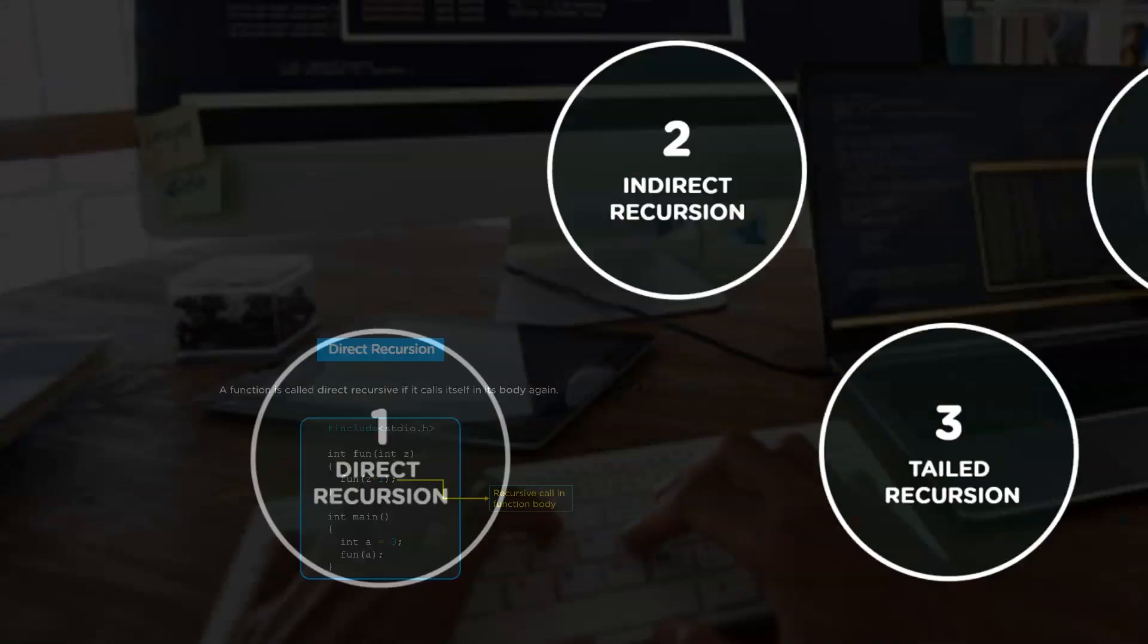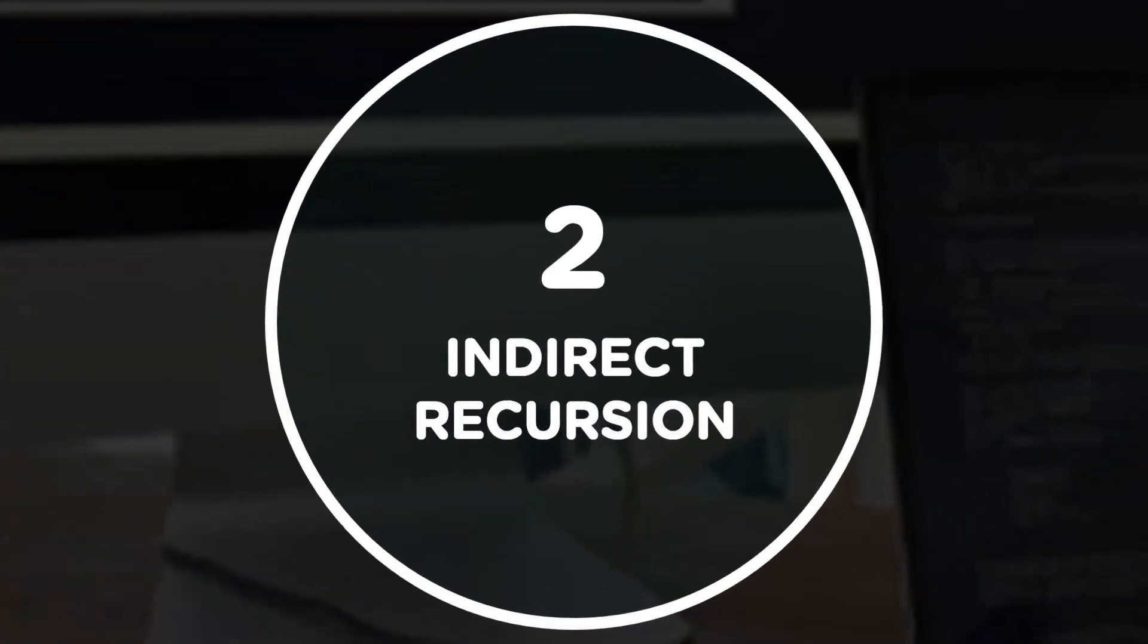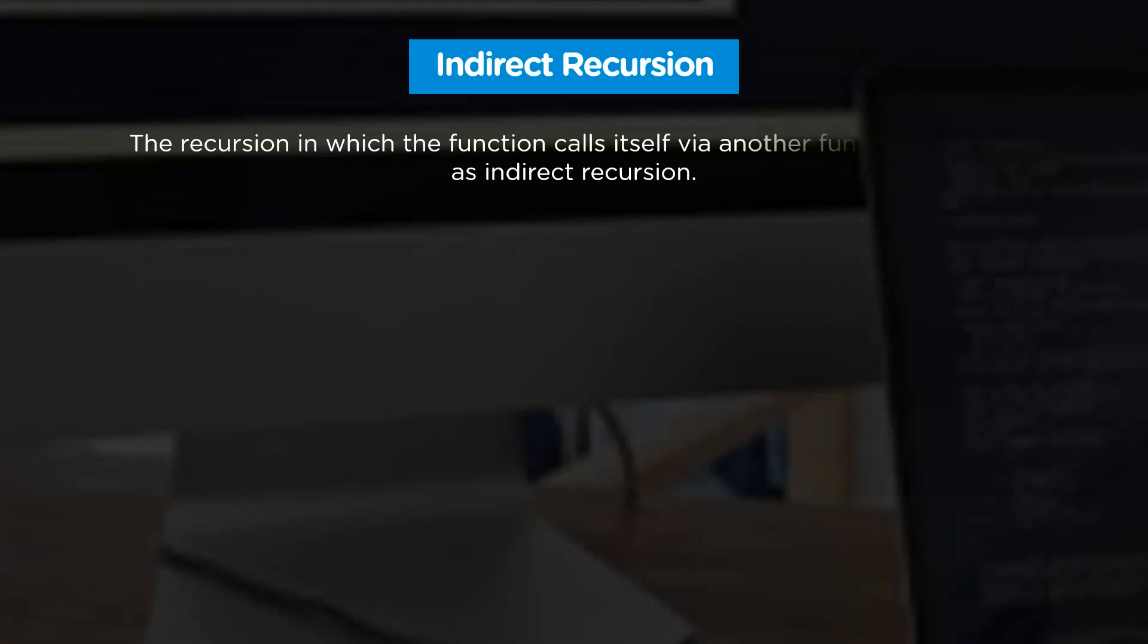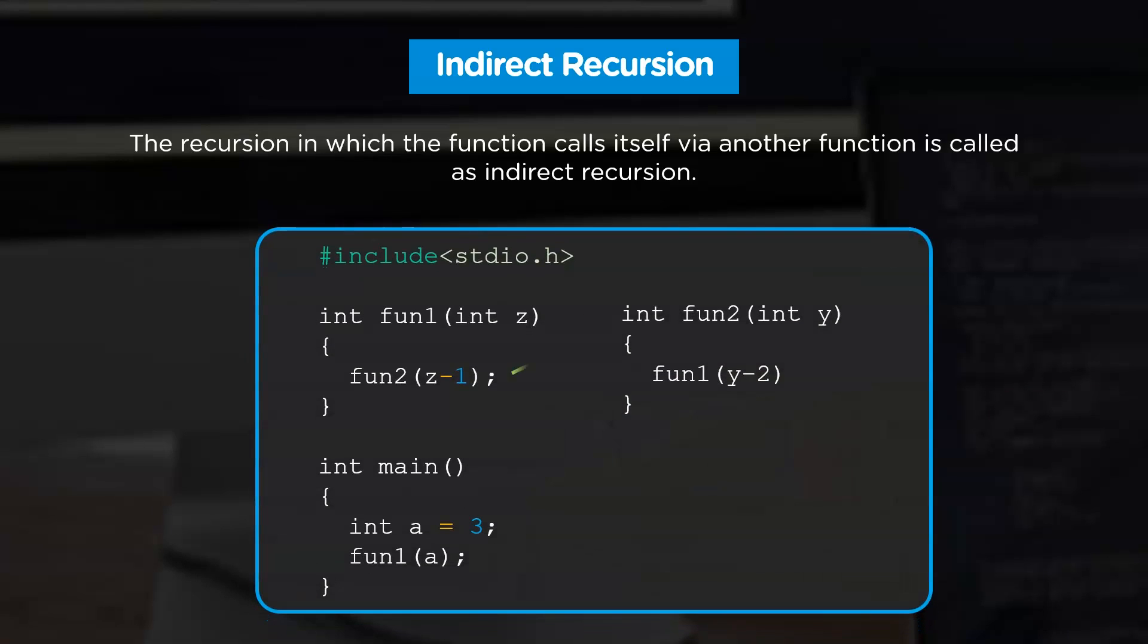Next up is indirect recursion. The recursion in which the function calls itself via another function is called indirect recursion. For example, in this program, you can clearly see that the function fun1 is explicitly calling fun2 which is invoking fun1 again explicitly. Hence, we can say that this is an example of indirect recursion.